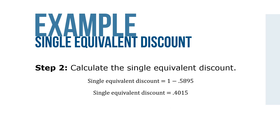Step 2: Calculate the single equivalent discount. 1 minus 0.5985 for a single equivalent discount of 0.4015.